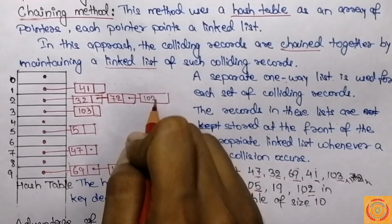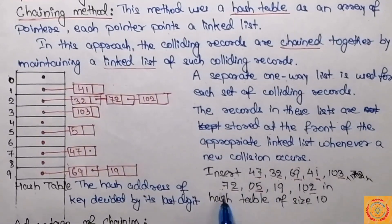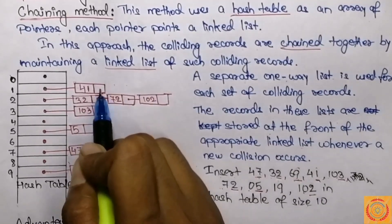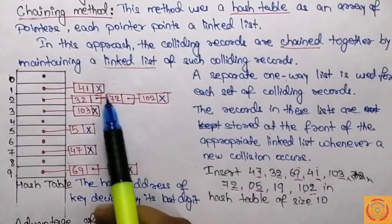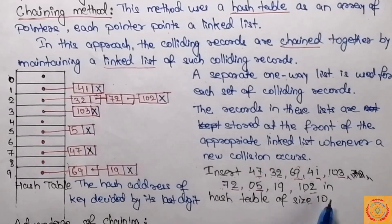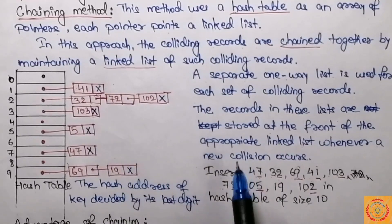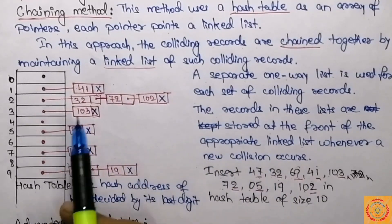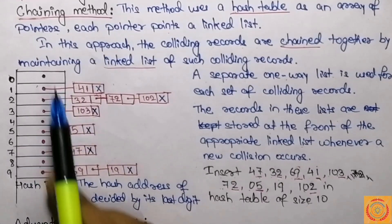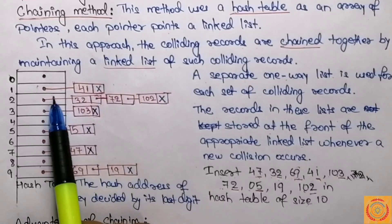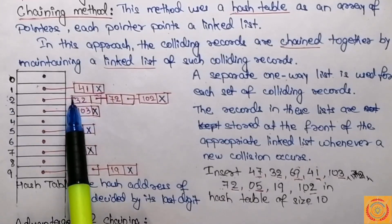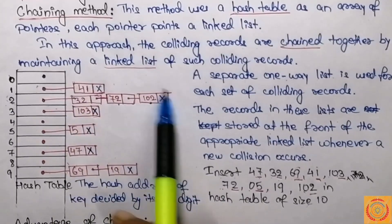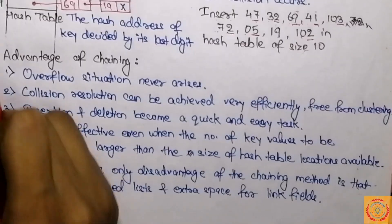We store 102 at index 2, chained after 72. Now that all elements have been mapped, the link part of the last node in each linked list points to null. In this way we have mapped all the elements using the chaining method. In summary, instead of storing records directly at locations in the address space, pointers are placed where each pointer points to a chain of records sharing the same hash location — for example, records 32, 72, and 102 all share hash location 2.